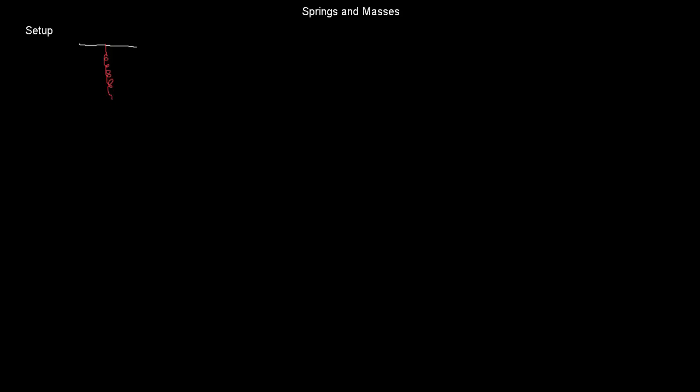Let's set up a simple physical situation. Imagine this is on a space station. Take a wall and attach a spring to that wall, then at the bottom of that spring put some kind of mass, then attach another spring to that, and at the bottom of that spring put another mass. Continue: another spring, another mass, another spring, another mass, and at the very bottom, one more spring and then a wall.